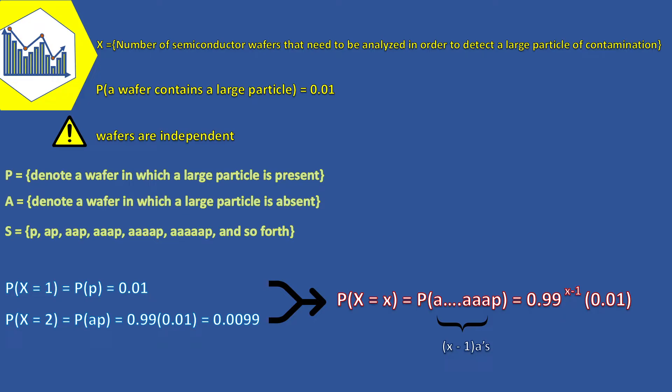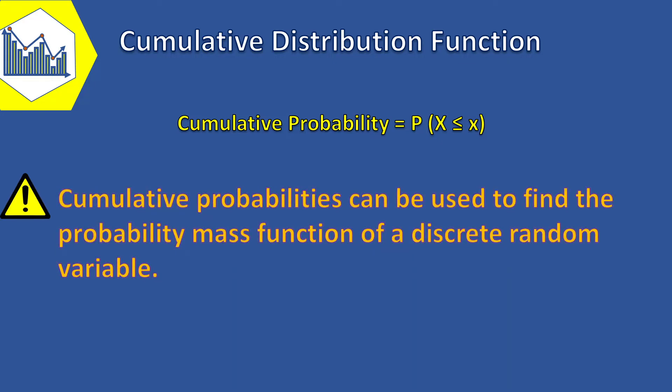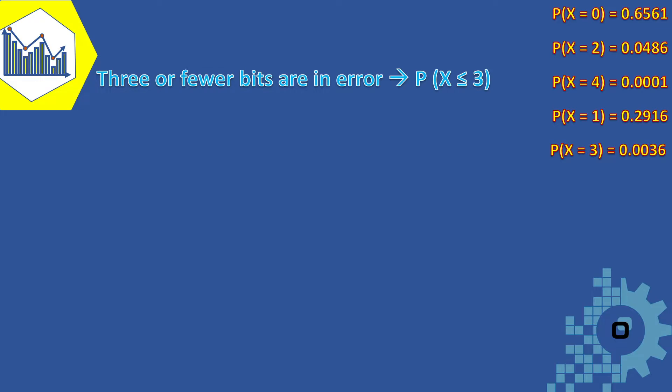Now it's time to get familiar with the cumulative distribution function. An alternate method for describing a random variable's probability distribution is with cumulative probabilities, such as P(X ≤ x). Cumulative probabilities can also be used to find the probability mass function of a discrete random variable. To motivate the formal definition, consider the digital channel example: we might be interested in the probability that three or fewer bits are in error, expressed as P(X ≤ 3).